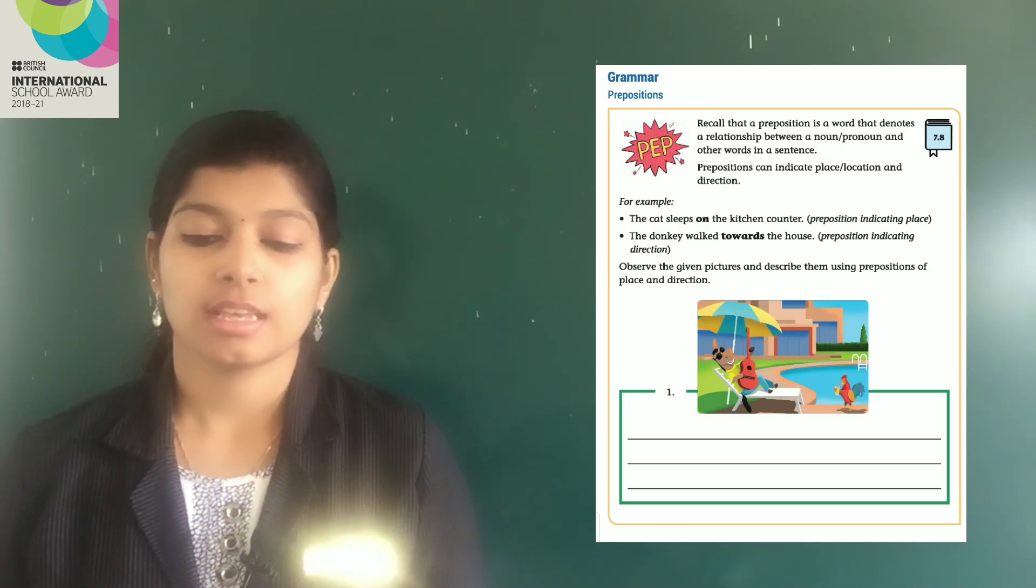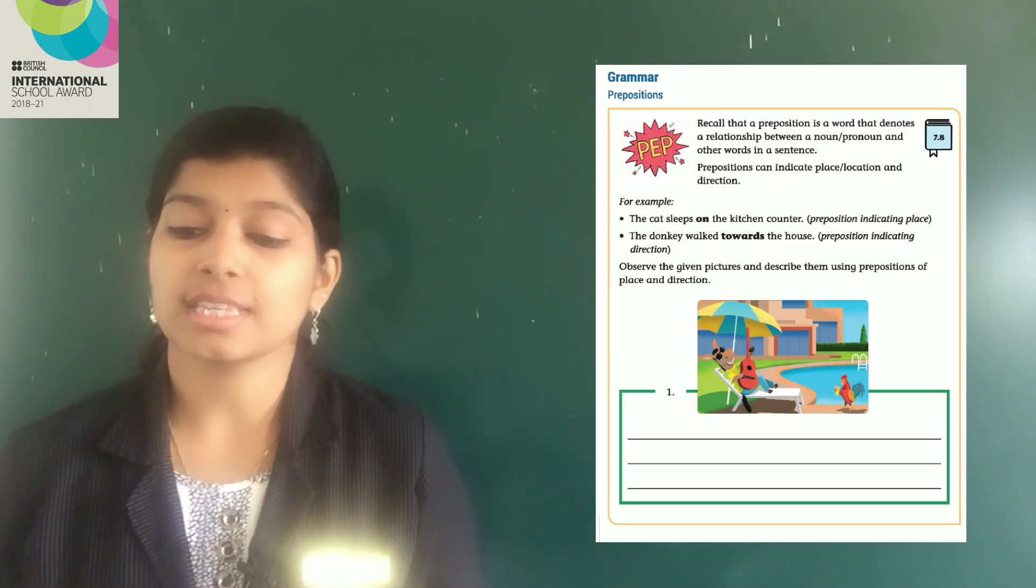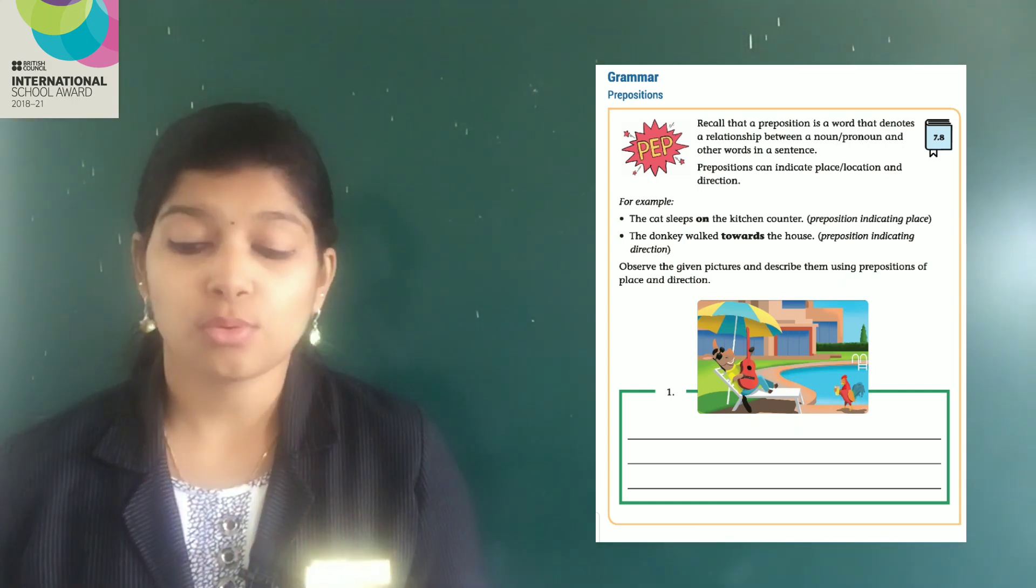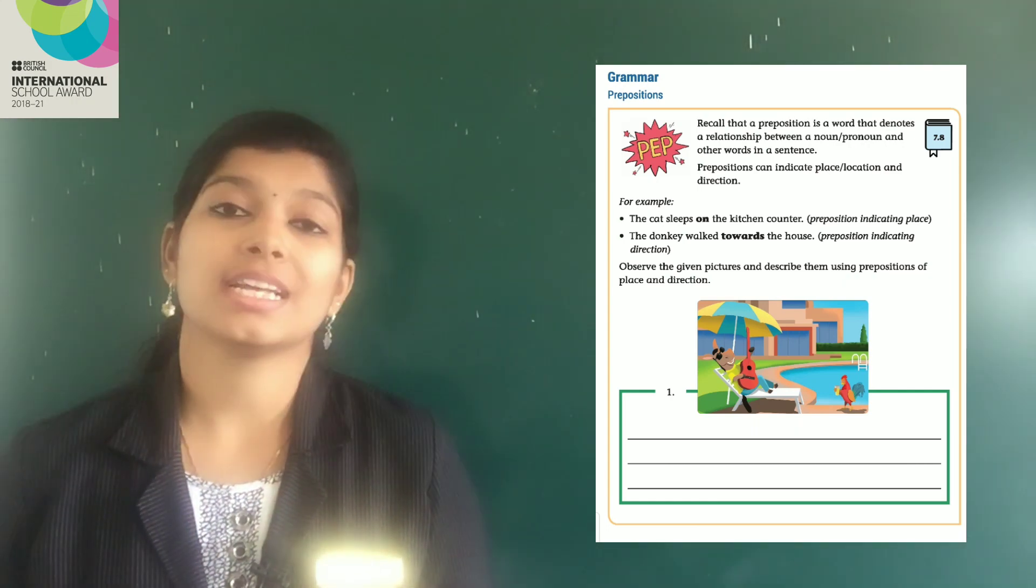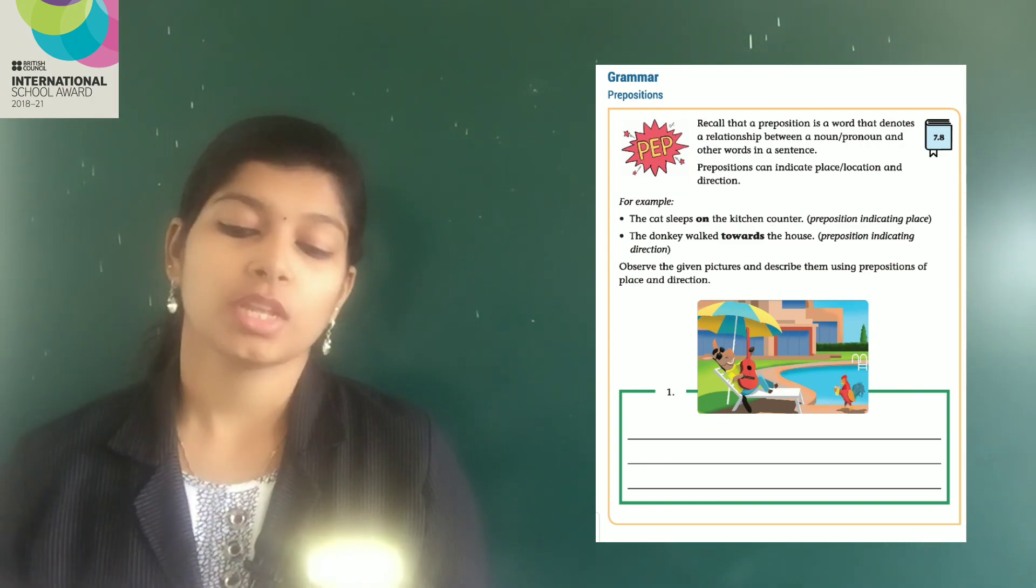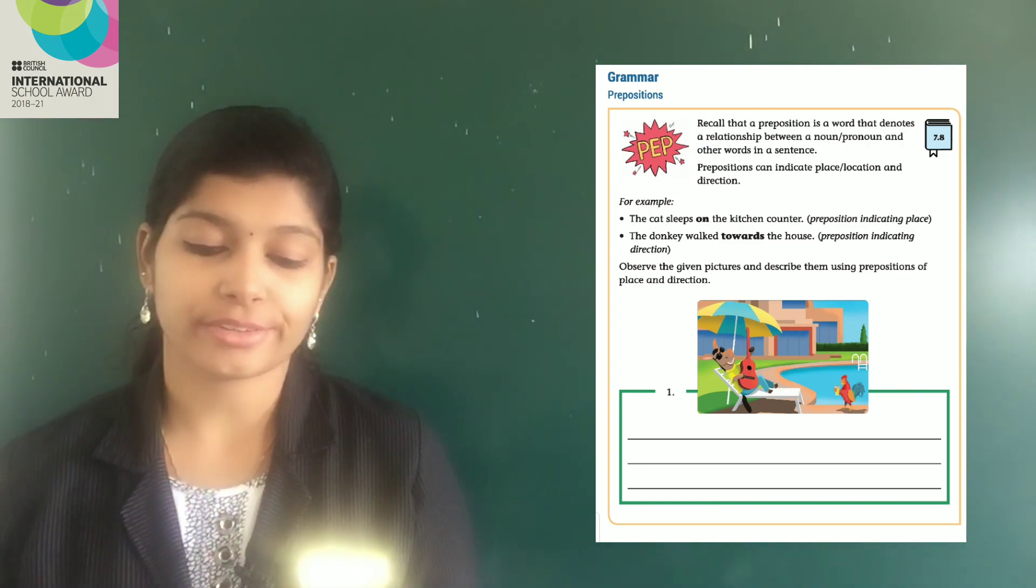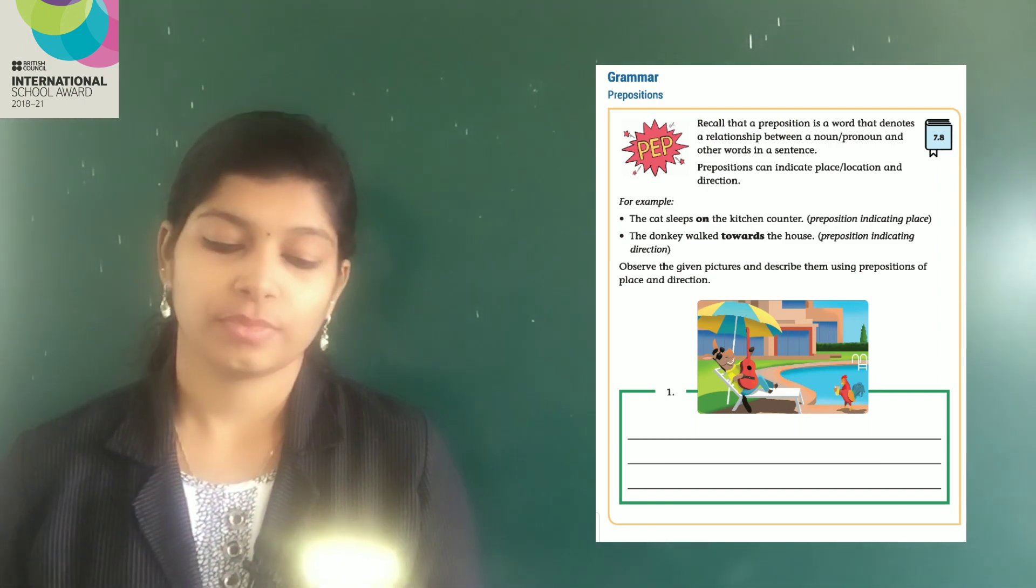That is, prepositions. All of you take your English studio, page number 19. Recall that a preposition is a word that denotes a relationship between a noun, pronoun and other words in a sentence. Prepositions can indicate place, location and direction. For example,